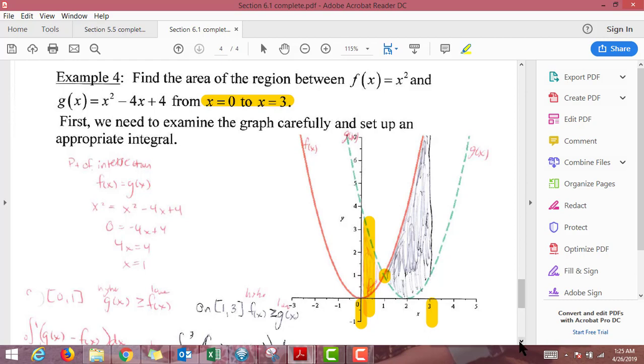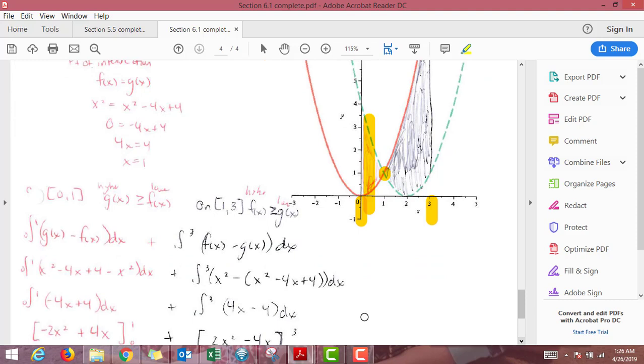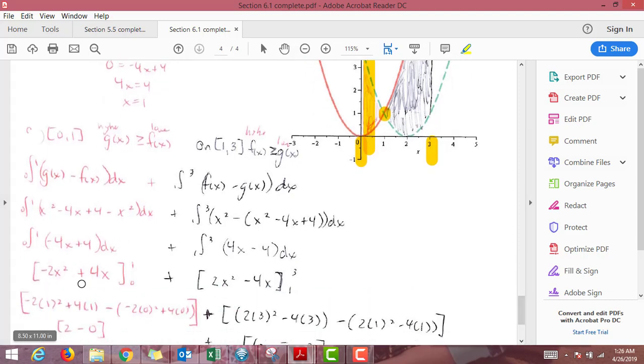So on the interval from 0 to 1, the green dashed one, which was the x squared minus 4x plus 4 one, was higher. So it should go first, and then minus lower. Then we can simplify, and we'll just do our antiderivatives with the reverse power rule. Plug 1 into the whole thing, plug 0 into the whole thing, and get an answer.